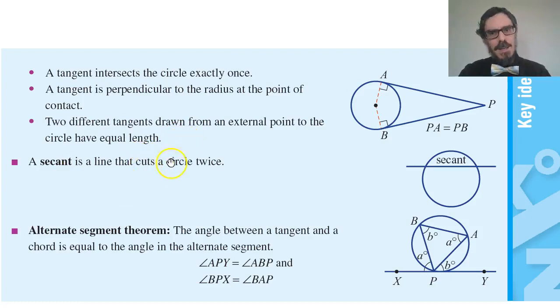A secant is a line that touches the circle twice. If you like you can think of a secant as a chord extended outside the circle. Or conversely a chord is the part of a secant that's inside the circle.